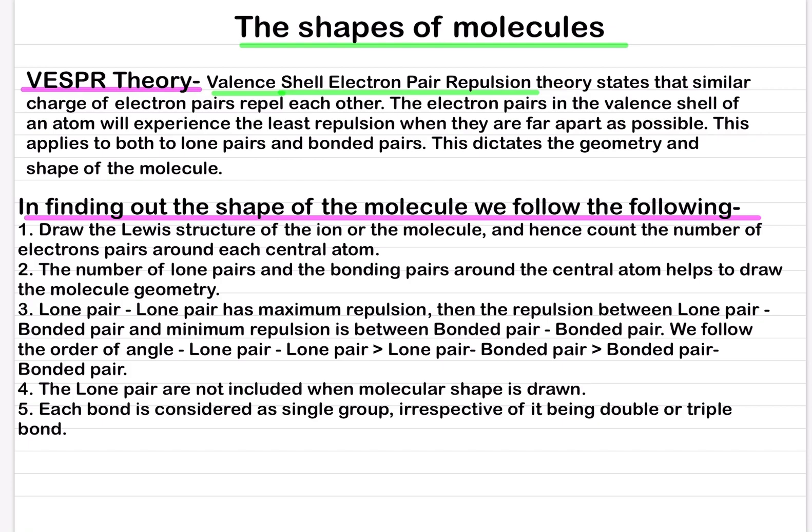In finding out the shape of the molecule we follow the following. First, draw the Lewis structure of the ion or the molecule and hence count the number of electrons pairs around each central atom. The number of lone pairs and the bonding pairs around the central atom helps to draw the molecule geometry.